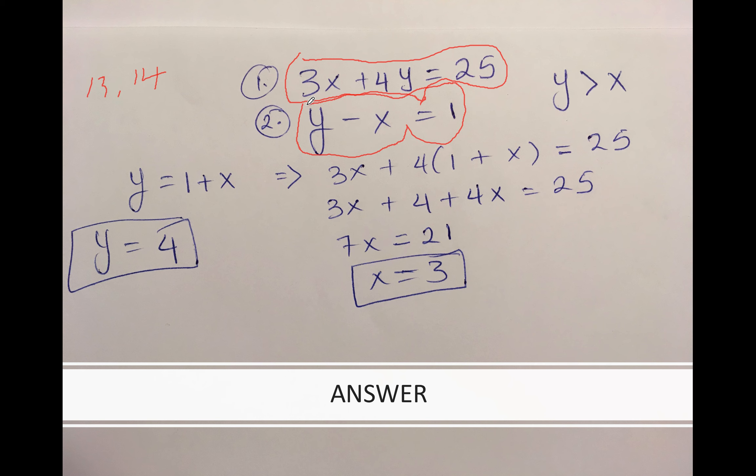Because the difference is always one, I now have a system of equations where I have two unknowns, x and y, and I have two equations. This can be solved. I'm going to add x on both sides - this one cancels out and I'm left with y = 1 + x.